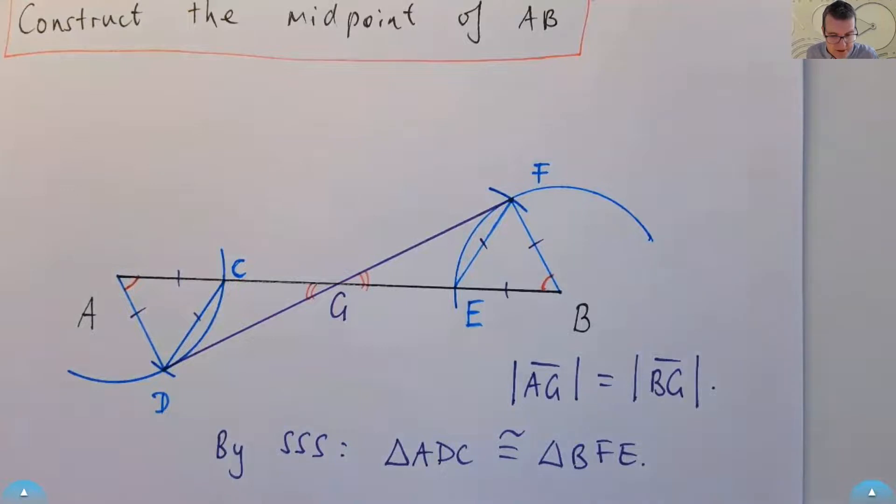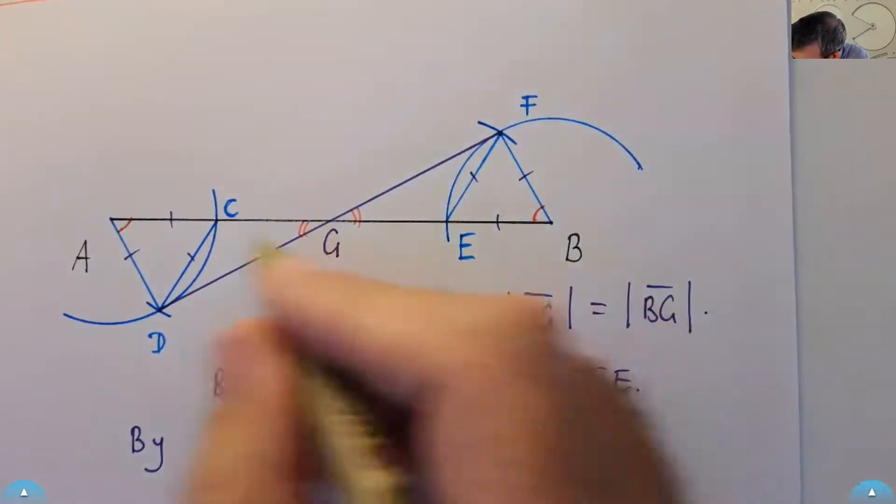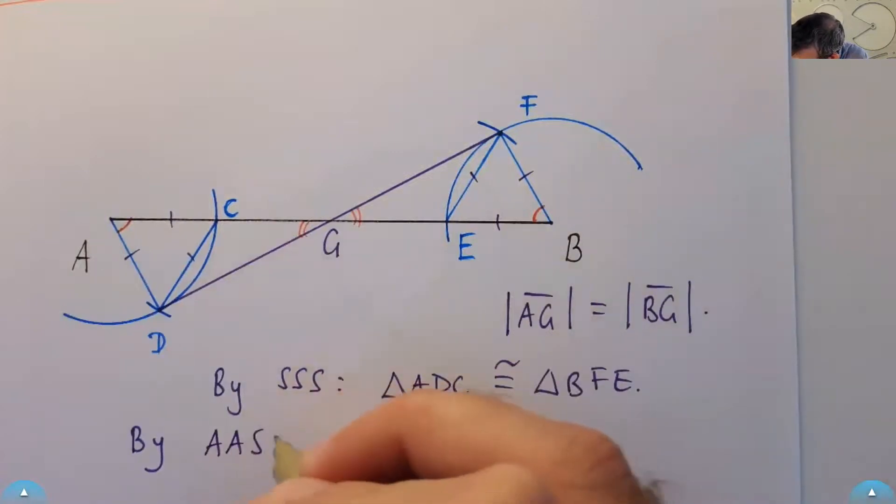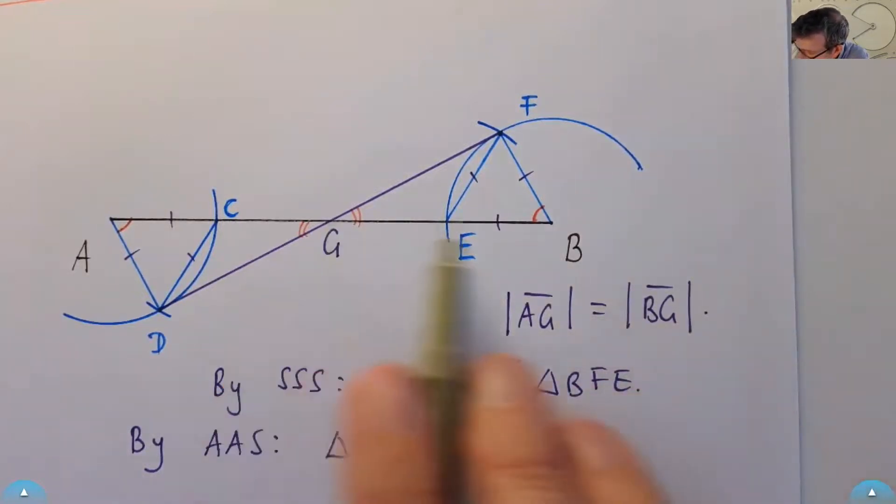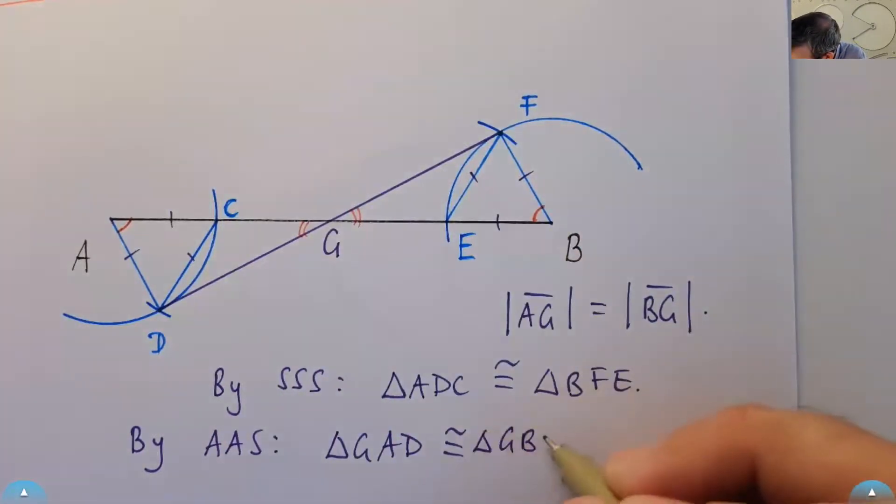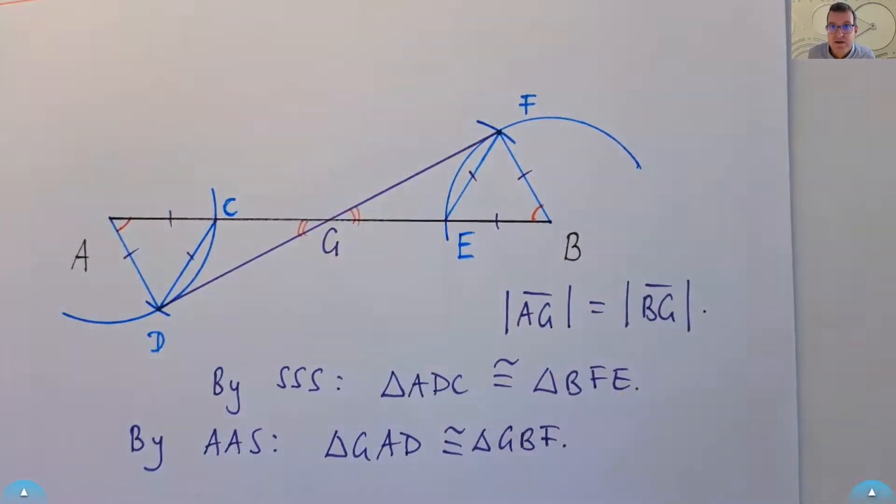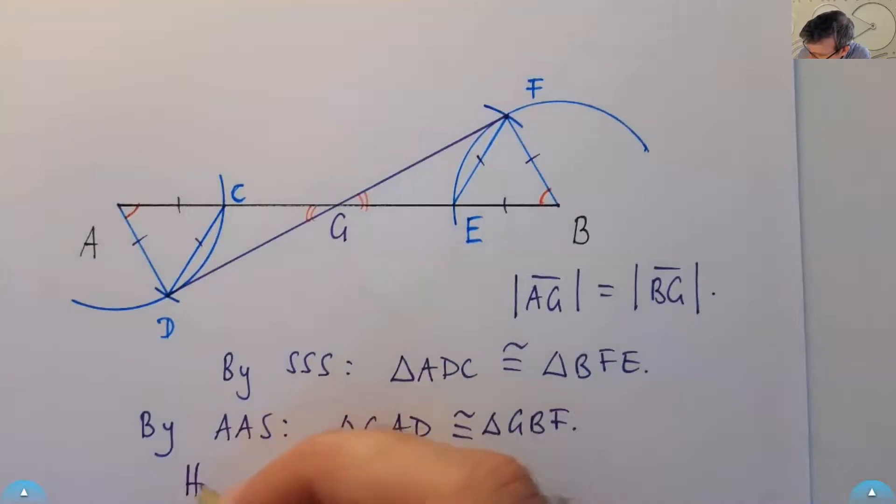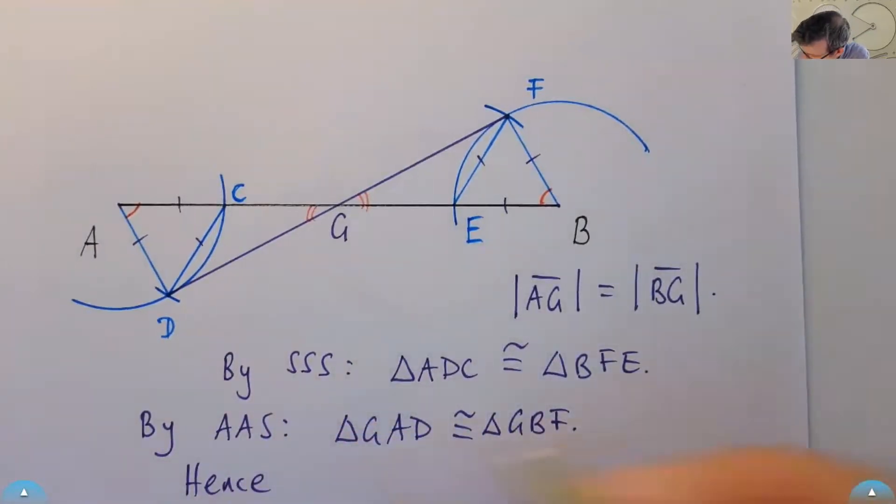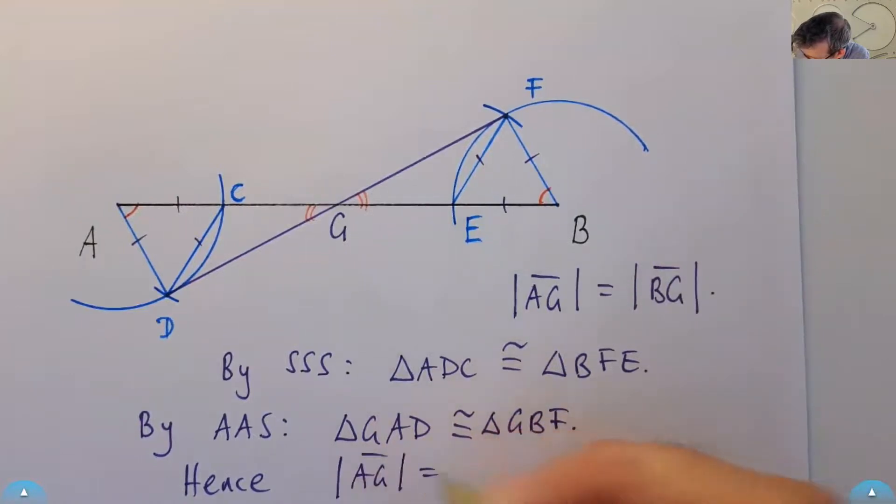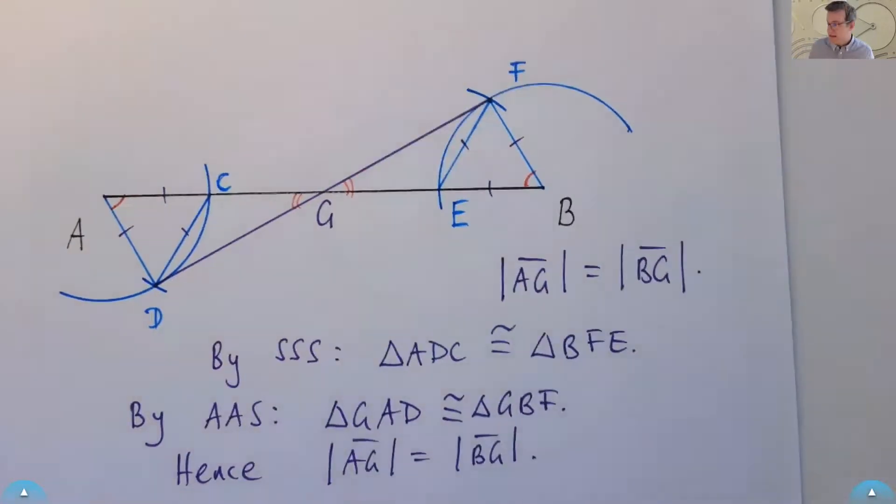So that would be the final step. So by angle angle side, we know that triangle GAD is congruent to triangle GBF. So what do we know? We know that the corresponding sides and angles are equal. This side corresponds to this side. So we would conclude that these two lengths are equal and hence G must be the midpoint of AB. So you can see we use similar triangles there twice. And there's probably lots of different ways to justify this.